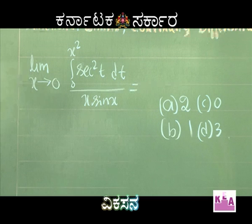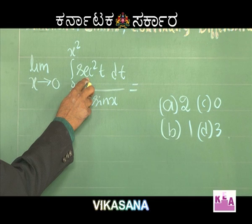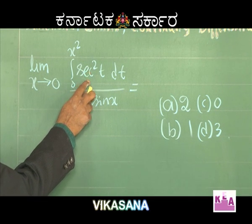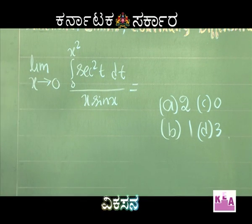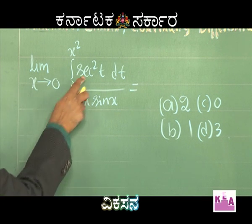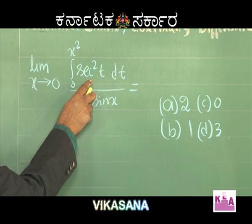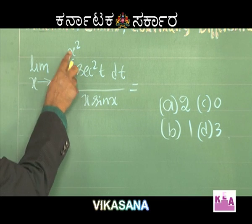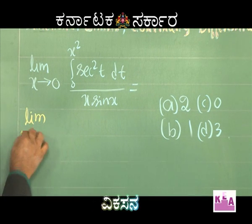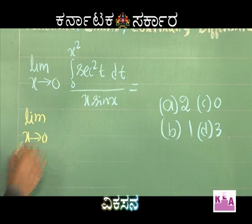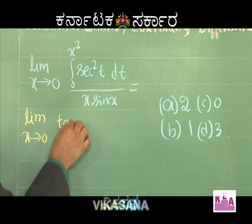This can be solved by evaluating the integral of sec²(t), which is tan(t). Substituting the upper limit x², the numerator becomes tan(x²). So we have the limit as x tends to 0 of tan(x²) divided by x·sin(x).